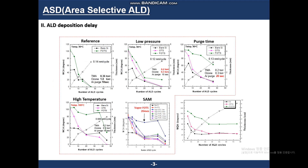In this study, I used an area deactivation method which delays ALD deposition. To achieve this, I controlled and changed several process conditions such as process time, temperature, and SAM materials. SAM is a self-assembled monolayer and it deactivates the surface to delay ALD deposition.